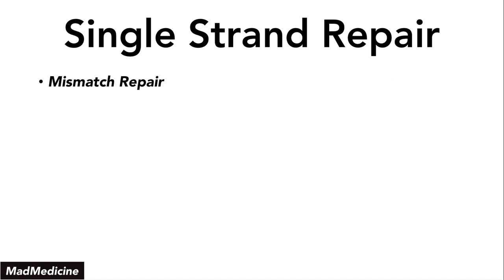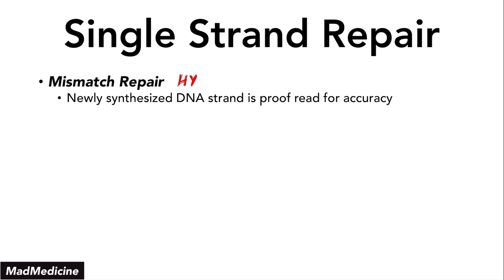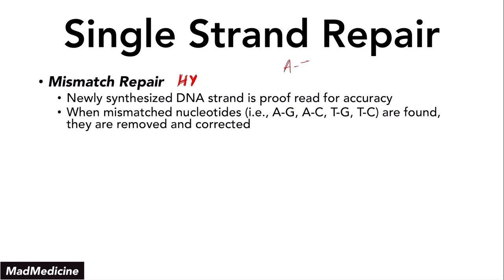Finally, we have the mismatch repair mechanism. This is pretty high yield because there are certain diseases associated with it that you should know. The mismatch repair mechanism occurs when you're dealing with nucleotides that are not matched to the correct corresponding nucleotide. Newly synthesized DNA strands are proofread for accuracy. Normal nucleotide pairing is A with T and G with C — one purine matches with one pyrimidine. When there is a mismatch, your body will notice and remove and correct it, with ligase sealing the corrected strand.